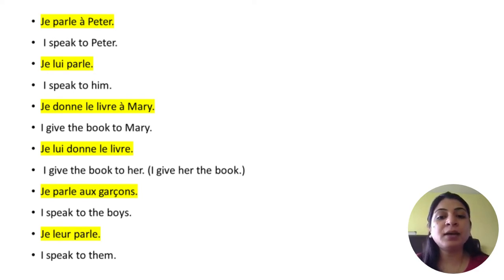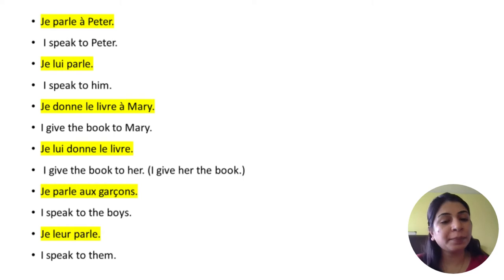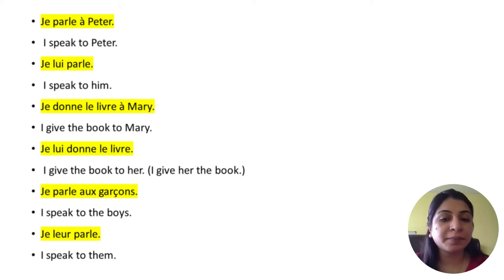'Je parle au garçon' — I speak to the boy. 'Je lui parle' — I speak to him. If there is one boy it is 'je lui parle', but if there are boys (plural) it becomes 'je leur parle' — I speak to them.